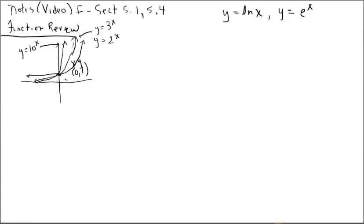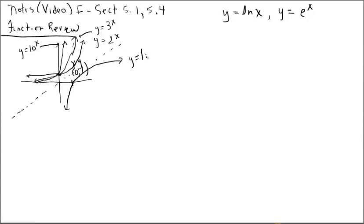Let's look at the inverses of each of these. If you consider the line y equals x and reflect across it, we get inverse functions. If (0, 1) is on the original function, then switching x and y gives (1, 0) on the inverse. The inverse of y equals 2 to the x, when reflected across y equals x, is the log base 2 of x.